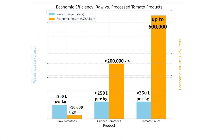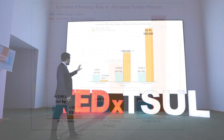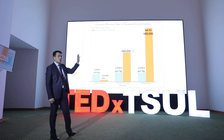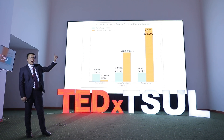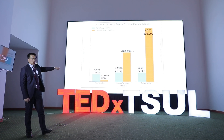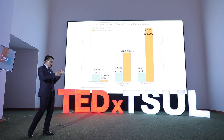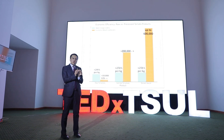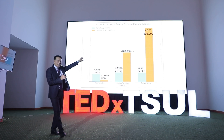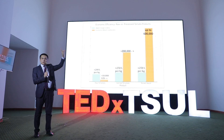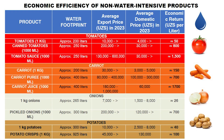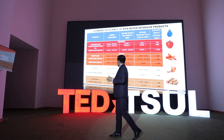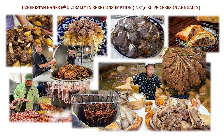What do I mean by a high value-added product? Here we have the economic efficiency of raw versus processed tomatoes. Tomatoes themselves require 200 liters of water to produce 1 kg, which is sold for 10,000 sums on the international market. But if you turn the tomato into canned tomato or tomato sauce, it can generate up to 600,000 sums on the international market. The same applies to other products — carrots, pickled onions, and potato crisps. All of them could be done with much better economic efficiency.